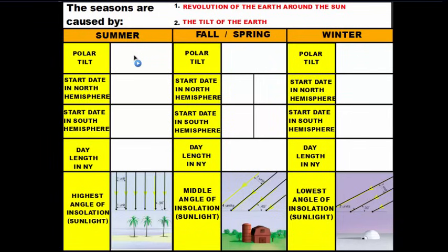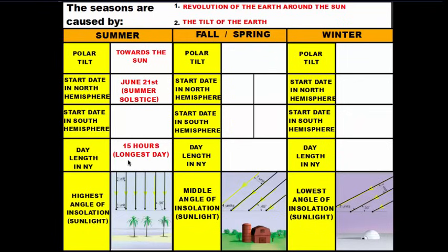In the summertime the polar tilt is always towards the Sun. In the Northern Hemisphere our start date is June 21st — you can remember this because the last day of school is usually that week, so summer vacation starts in June. We call this the summer solstice, which is the longest day of the year at about 15 hours of sunlight. Winter is the opposite, with the polar tilt away from the Sun, occurring on December 21st — called the winter solstice.